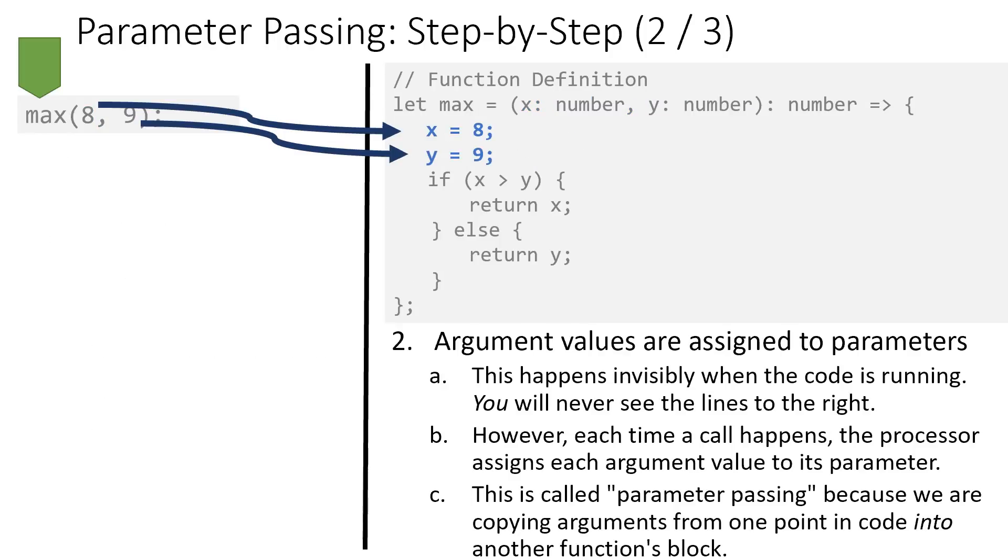What then happens once we've found the definition is we're going to take the arguments, 8 and 9, and assign those values to the parameters x and y. And I want you to imagine that these two lines that are written in blue are magically going to appear in your program when the processor reaches this point. This is what we call parameter passing, and it's what allows an argument to be passed into the function body's block in order to be used as a local variable inside of that function.